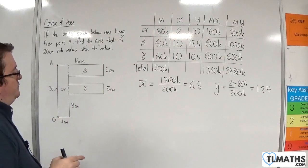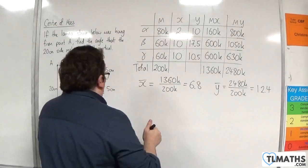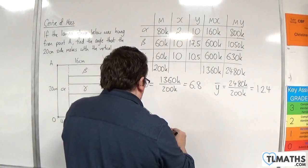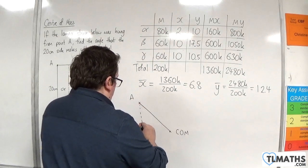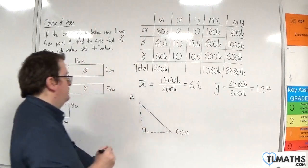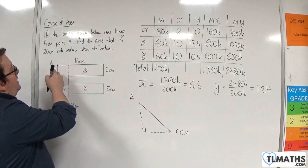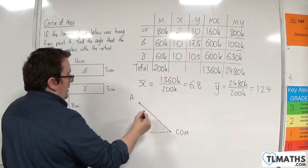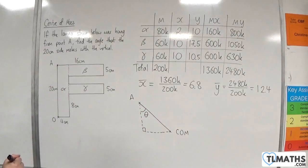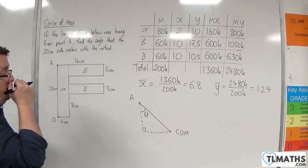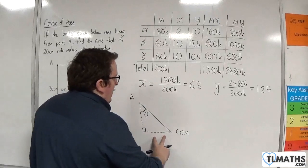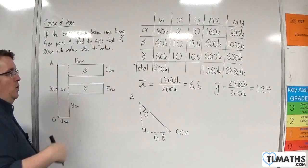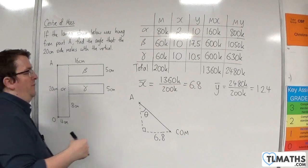Right, so now what we need to think about is from my point A to the center of mass. So here's A, here's the center of mass. And what I want to do is think about a right-angled triangle. And we're looking at the angle that the 20 centimeter side is going to make with the vertical. So this is essentially the 20 centimeter side. So I'm interested in this angle here. Now, A has coordinates of 0, 20. So this distance here will be 6.8. This distance will be 20 take away the 12.4, so that would be 7.6.